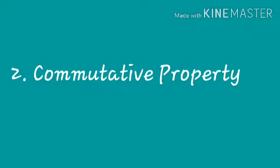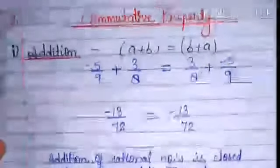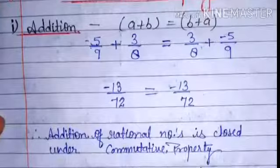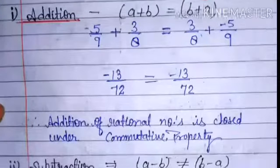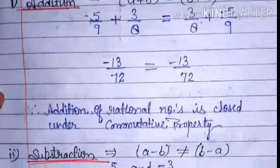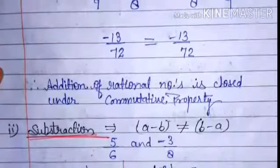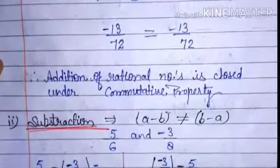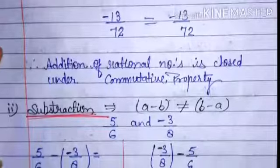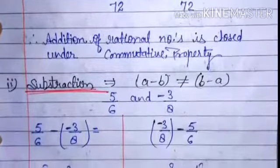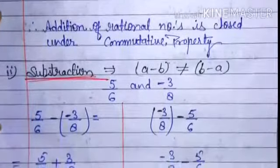I have already told you about the closure property in the previous video. In this video we will discuss about the commutative property. First we will check for addition: if we have two rational numbers a and b, we check if a plus b equals b plus a. Taking minus five upon nine plus three upon eight, and writing the same numbers with interchanged places, we get minus 13 upon 72 on both sides. So we can say addition of rational numbers is closed under commutative property.